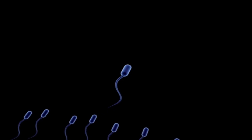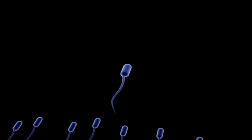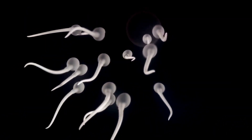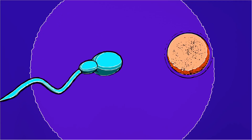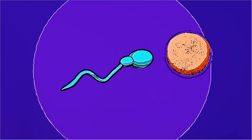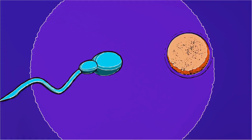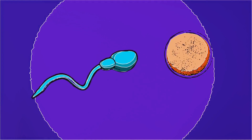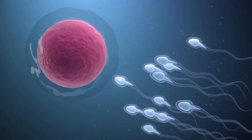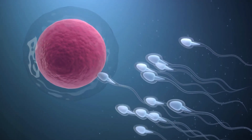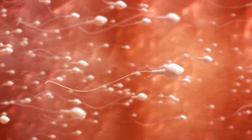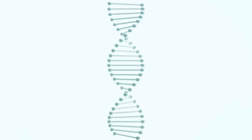The strongest, most resilient sperm will break through the protective layer surrounding the egg, the zona pellucida, in a process called the acrosome reaction. This is no small feat, but rather an epic journey requiring strength, stamina, and a little bit of luck. Once a single victorious sperm penetrates the egg's outer layer, an incredible transformation begins. The genetic material of the sperm, carrying half of the DNA necessary to create a new individual, merges with the genetic material of the egg, which carries the other half.